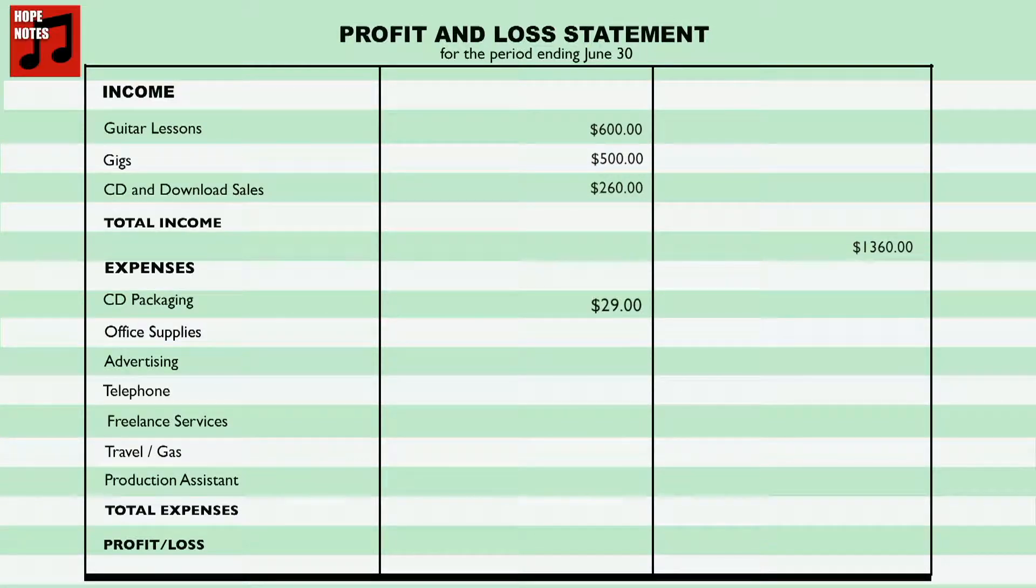Anthony spent $29 for CDs, $20 for business cards. Anthony paid $30 for online advertising, $35 for his phone service. The photographer charged him $100. He also spent $160 for gasoline and paid his friend Sean $250 for helping him set up and run sound for his gigs. Anthony earned a total of $1,360 in income and paid out $624 in expenses. He made $736 profit in his first month of operation.